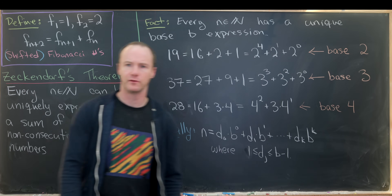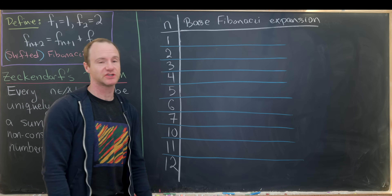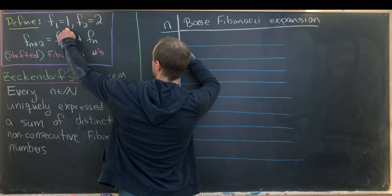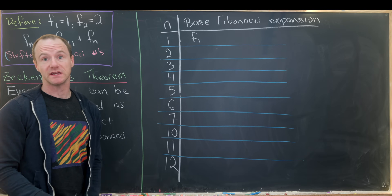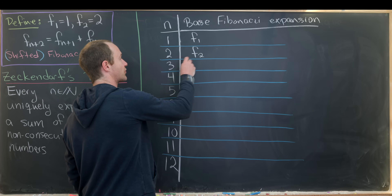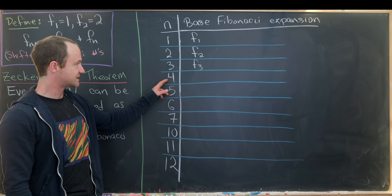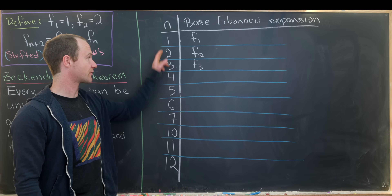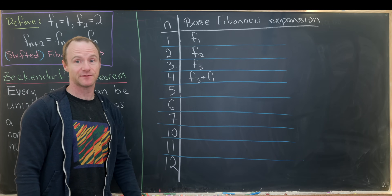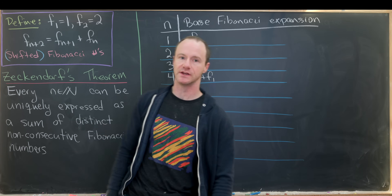Before diving into the proof, let's build a chart for some small numbers and their base Fibonacci expansions. We have n on one side and the expansion on the right. Notice that 1 is the first Fibonacci number F₁, 2 is the second Fibonacci number F₂, and 3 equals 2 plus 1, so that's F₃. Then 4 equals 3 plus 1, which is F₃ plus F₁ — a sum of distinct, non-consecutive Fibonacci numbers since F₂ lies between them.